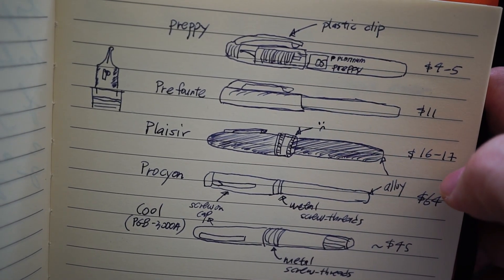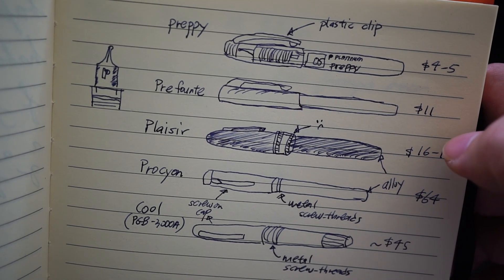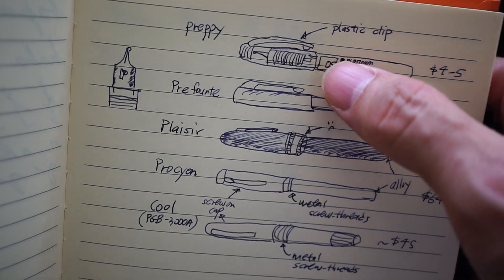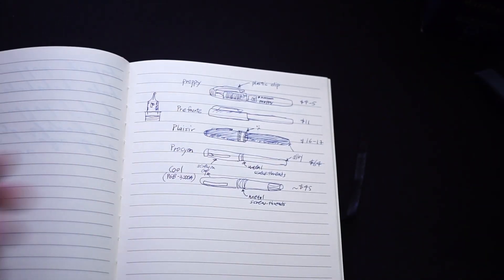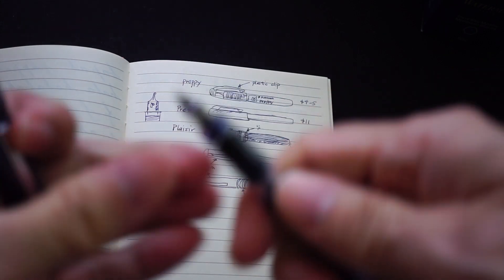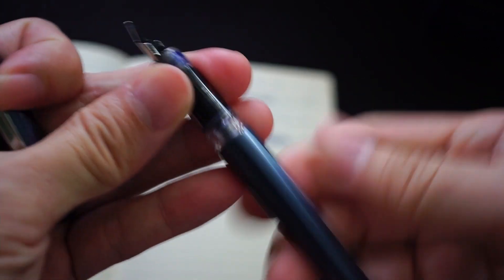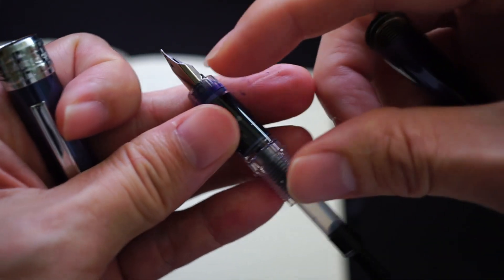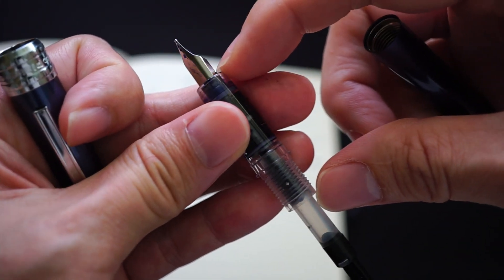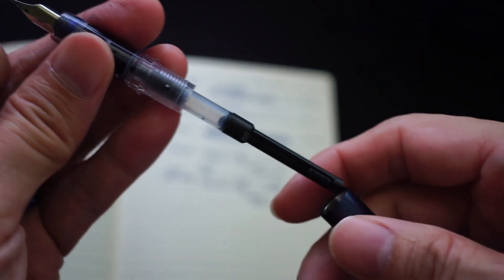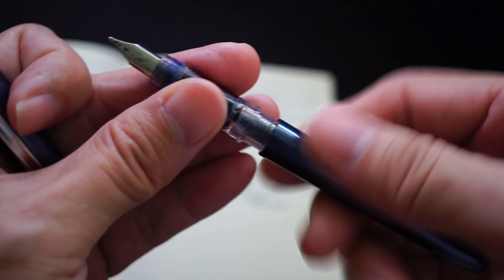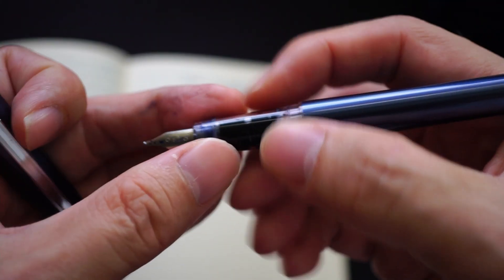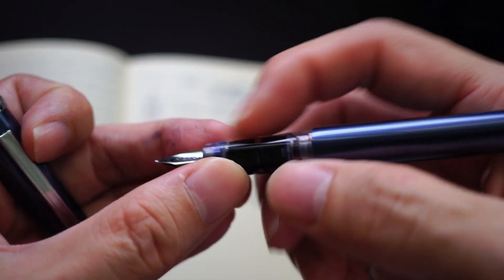The other thing to highlight would be the section design of these pens. So the Preppy has a very, essentially this is the Preppy section. If I open up the Placer, this area down here is actually the Preppy grip section. Why do I highlight this is because I like sections that are very broad, at least lengthwise.